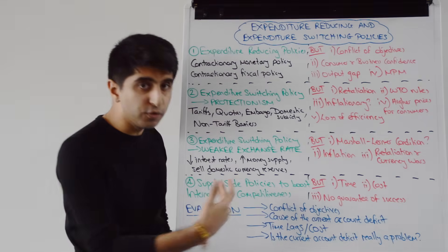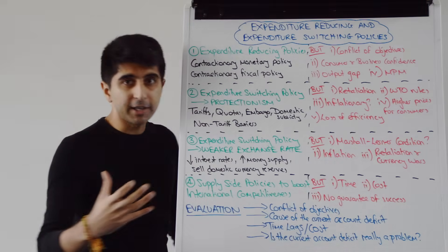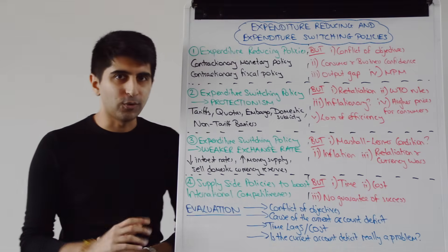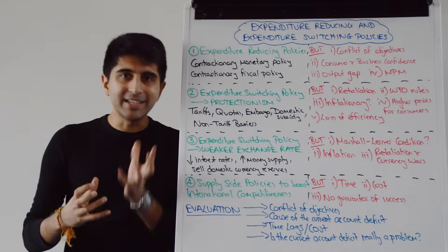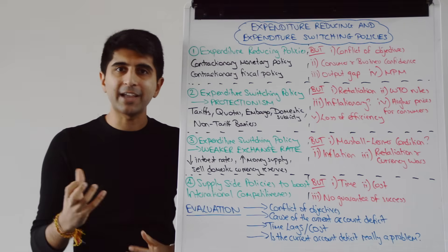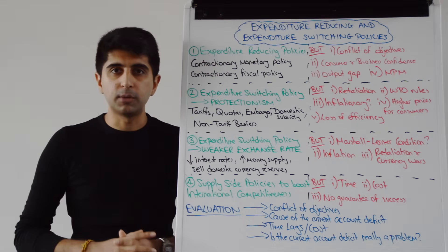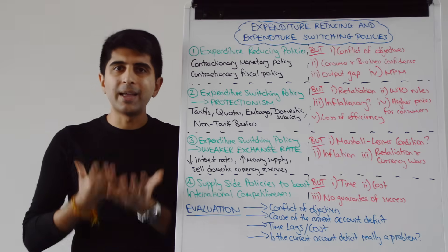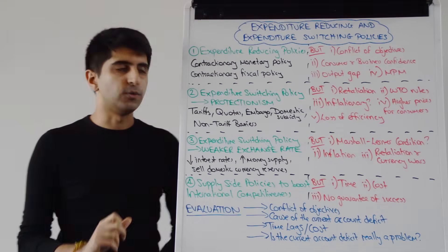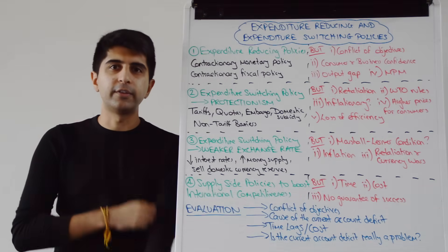The classic issues with supply side policies are that they are very long-run policies — they take a long time to work, they are extremely costly and carry a very large opportunity cost, and there is no guarantee of success. For them to work, they also need to be heavily targeted. If an economy has large productivity issues increasing costs of production and making exports less competitive, then supply side policies to improve productivity need to be used. If it is an investment issue, then supply side policies to boost investment must be used. Are supply side policies targeted at the real cause of the current account deficit?